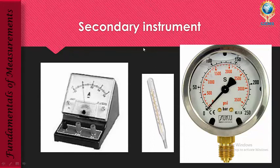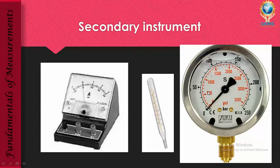Secondary instruments will mostly always have an error, so you have to calibrate the error. Whereas an absolute instrument will not have an error — that is the advantage of an absolute instrument. Though measuring is a little difficult with an absolute instrument, you can measure accurately. In a secondary instrument, though you can measure values very easily, you have to compare it with an absolute instrument or calibrate it — that is why it is called a secondary instrument.